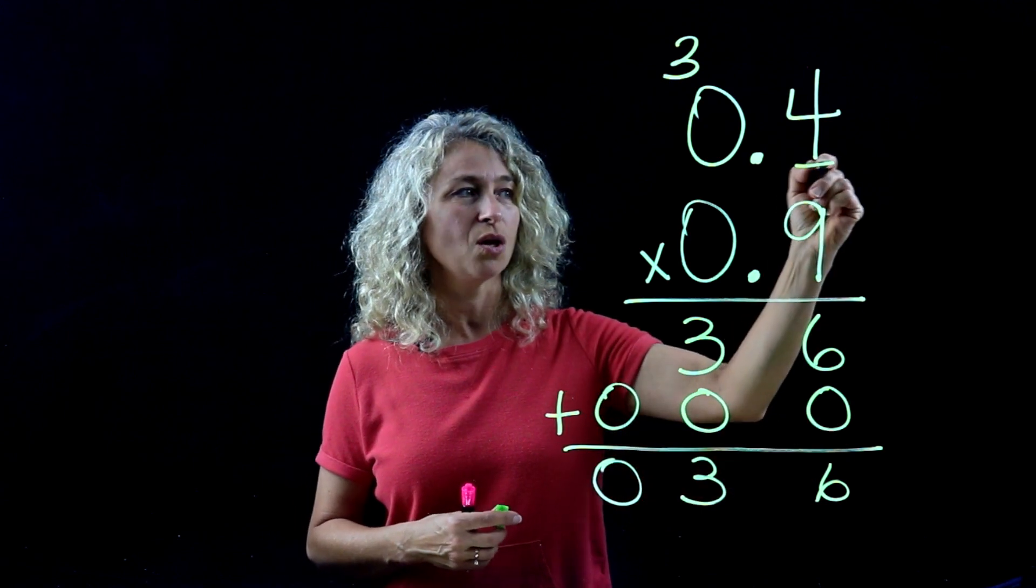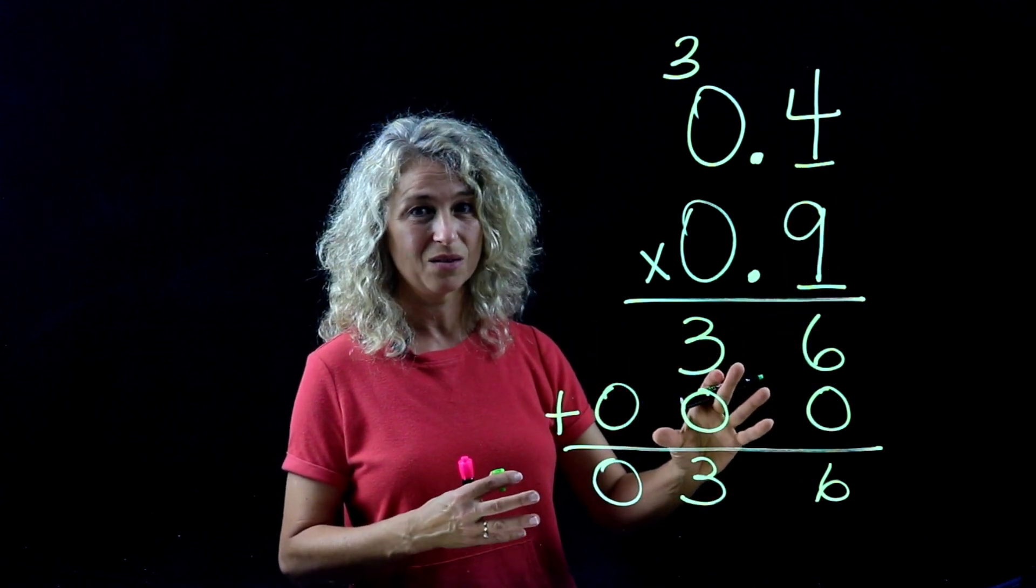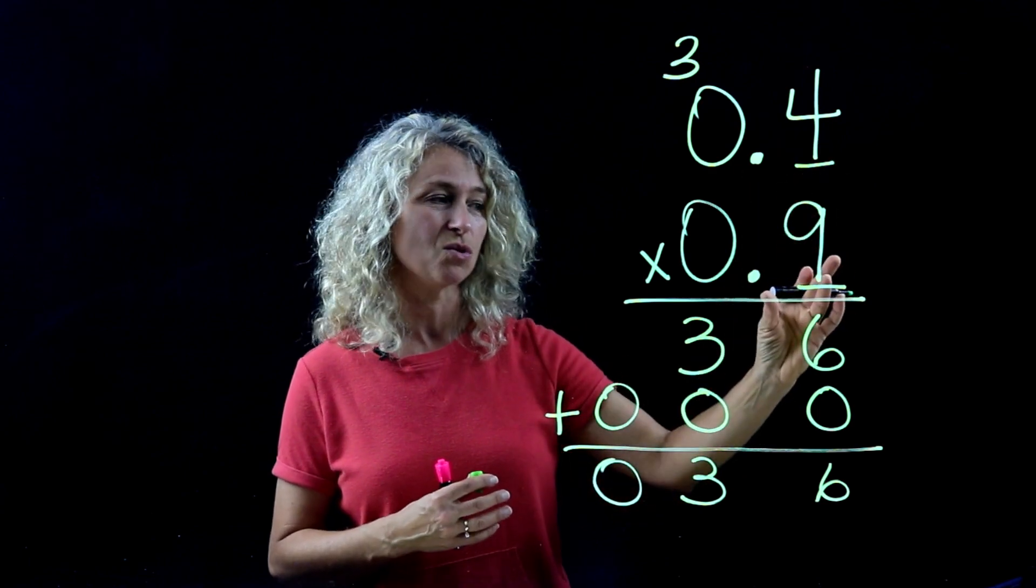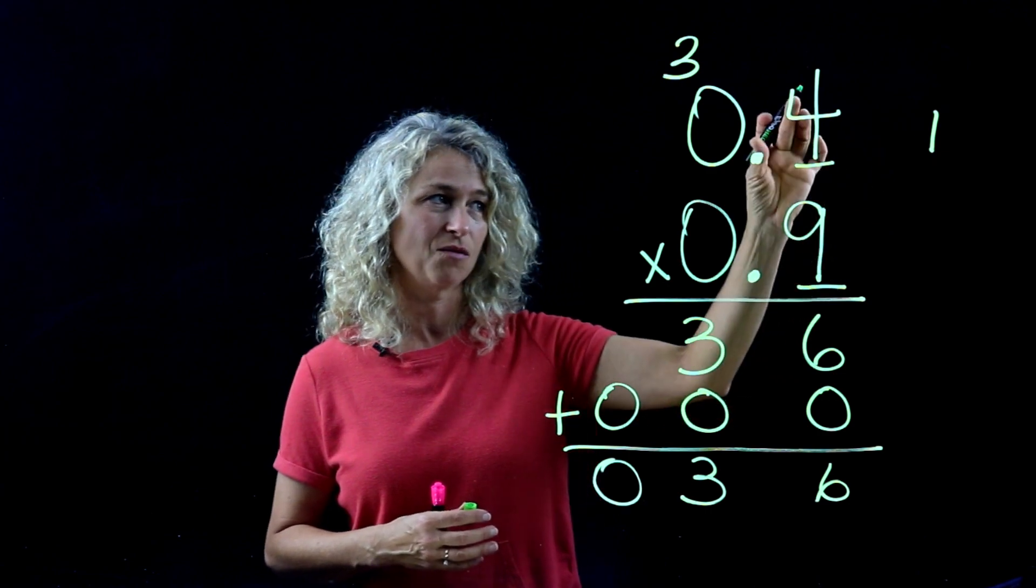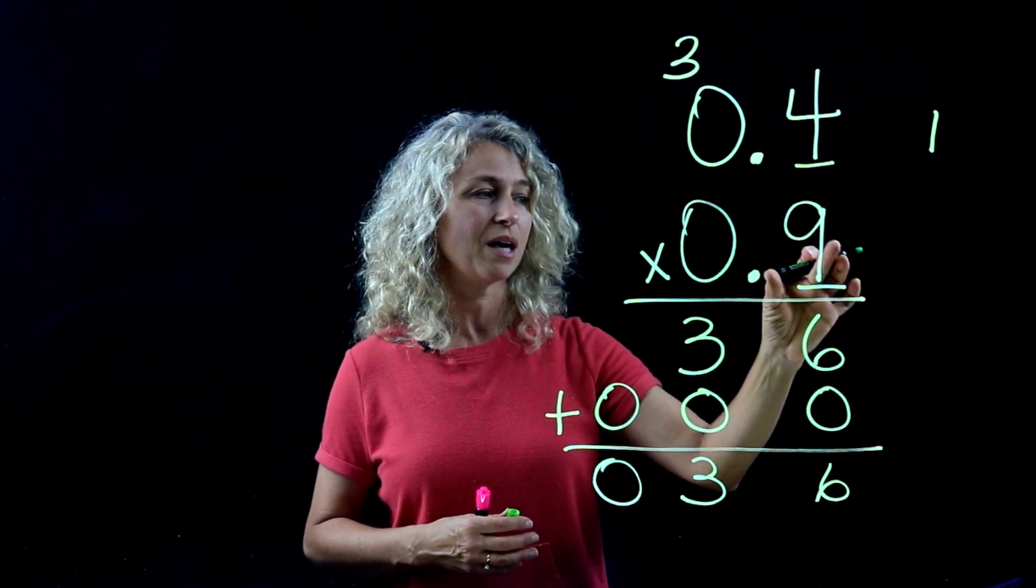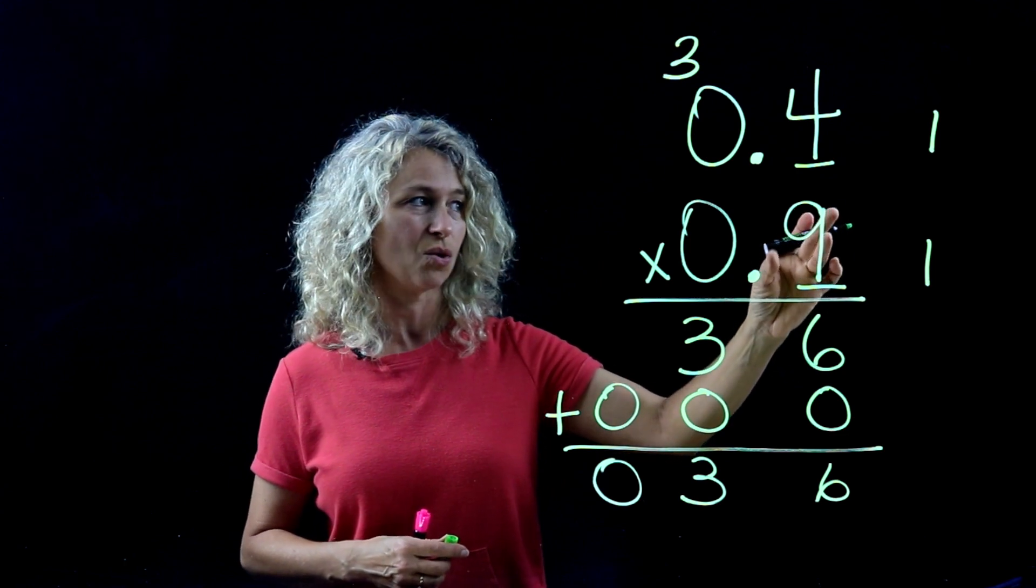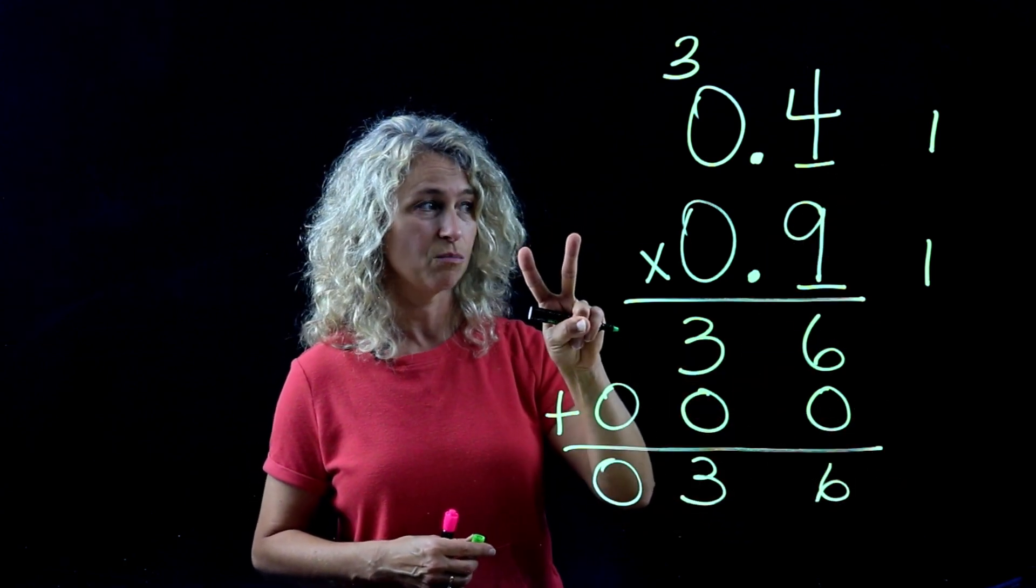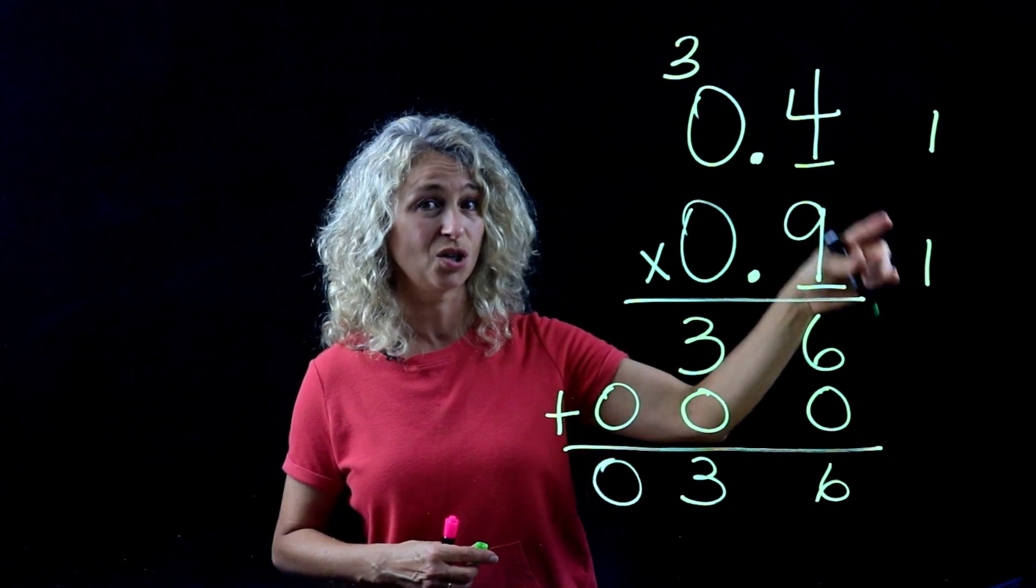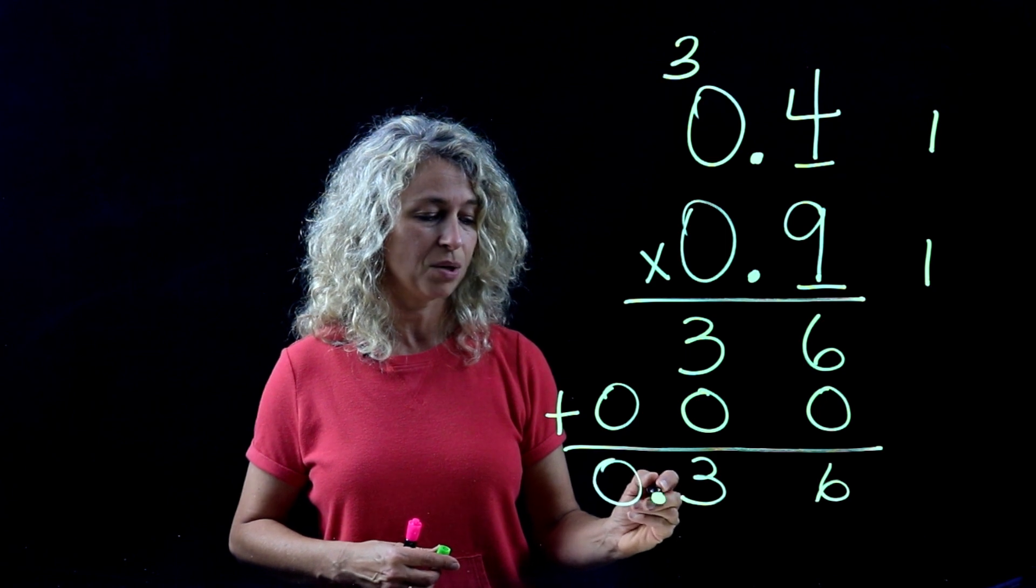So next time, just do it mentally and put your decimals in the correct place. We have one decimal place for the top factor, and one decimal place for the second factor. So below in the product, we need two decimal places because we have two above. So we're going to go over 1, 2, and place our decimal.